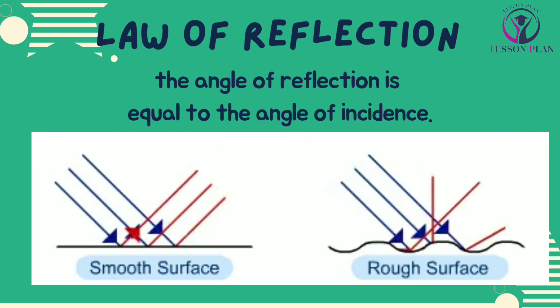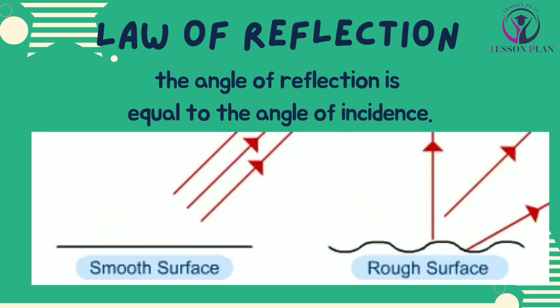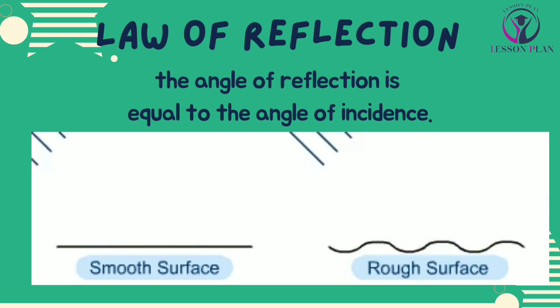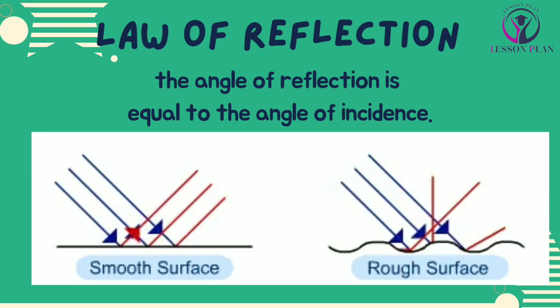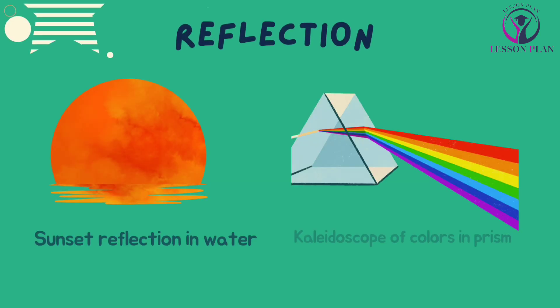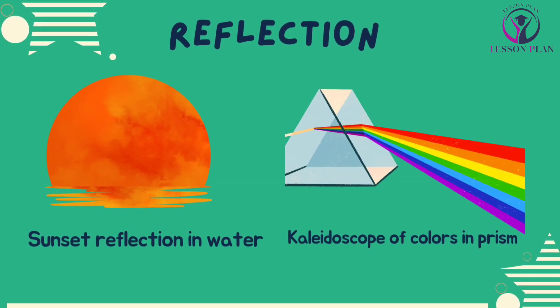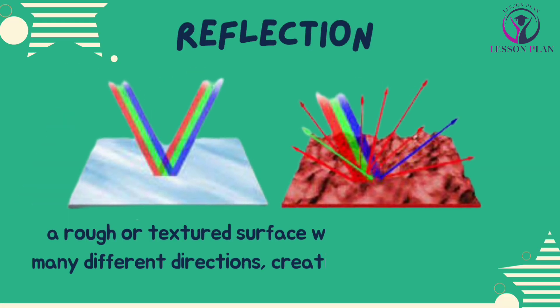This phenomenon is known as the law of reflection. When light reflects off a surface, it can create fascinating visual effects, such as a reflection of a sunset in a lake or a kaleidoscope of colours in a prism.